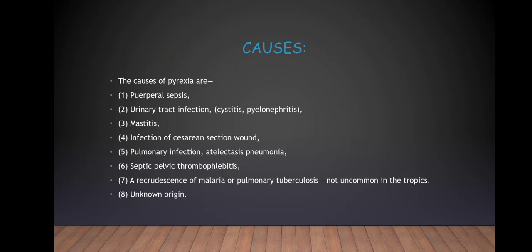The causes of puerperal pyrexia include: 1. Puerperal sepsis. 2. UTIs such as cystitis or pyelonephritis. 3. Mastitis. 4. Infection of the caesarean section wound. 5. Pulmonary infection — atelectasis or pneumonia. 6. Septic pelvic thrombophlebitis. 7. A recrudescence of malaria or pulmonary tuberculosis, which is not uncommon in the tropics. 8. It can be of unknown origin, whereby the above causes have been ruled out but the patient still has puerperal pyrexia.